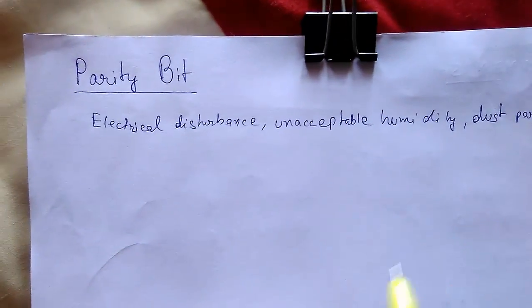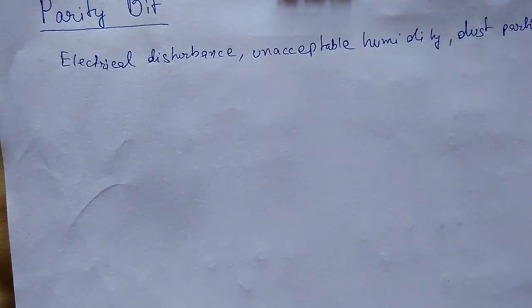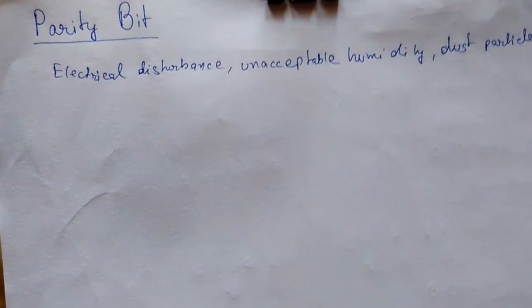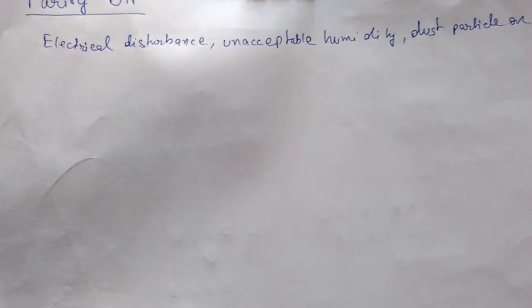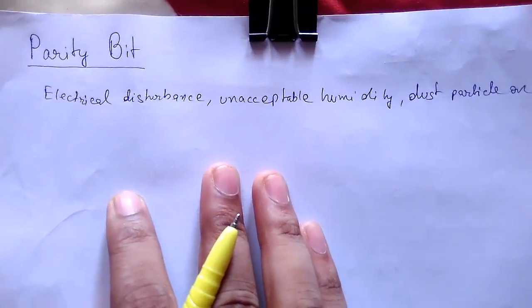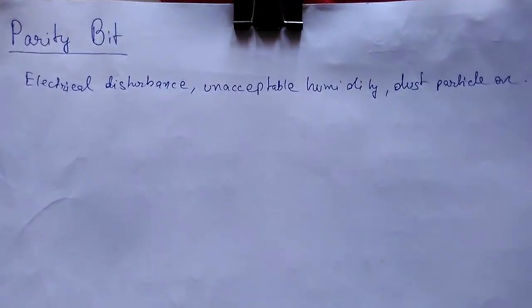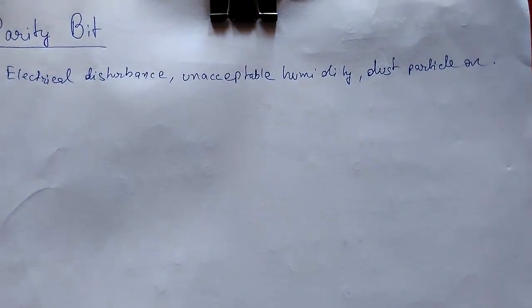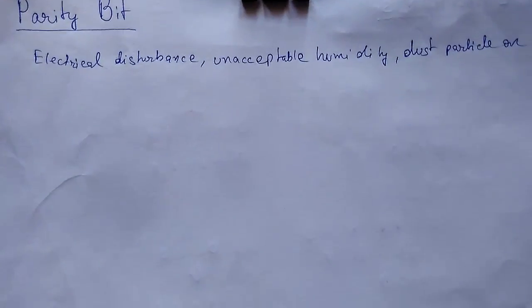To overcome this problem, an extra bit is added with the data for detecting errors. This extra bit is called parity bit. The parity bit cannot correct error but it can only detect error for a single bit condition. There are two types of parity bits: even parity and odd parity.